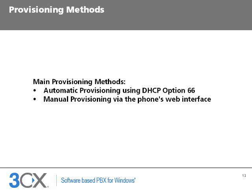Now that the PBX has generated the configuration files, we need to tell the phone where to find them. There are two main methods depending on the phone's capabilities or our needs. The first is automatic provisioning using DHCP option 66. The second is manual provisioning via the phone's web interface. A third method using TFTP is outside the scope of this training component as it requires additional components not part of the standard 3CX phone system installation.